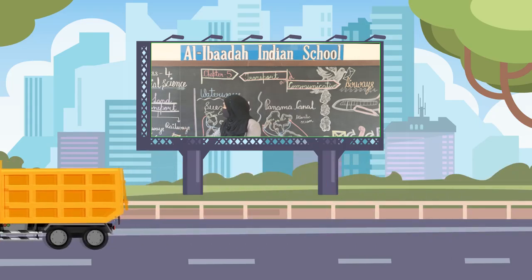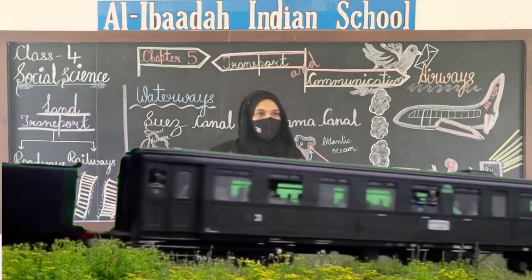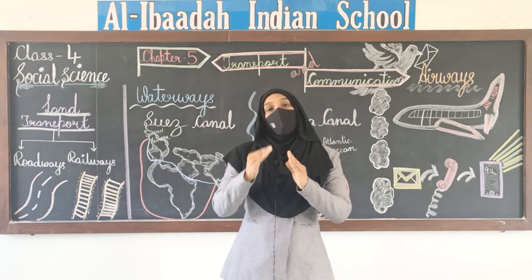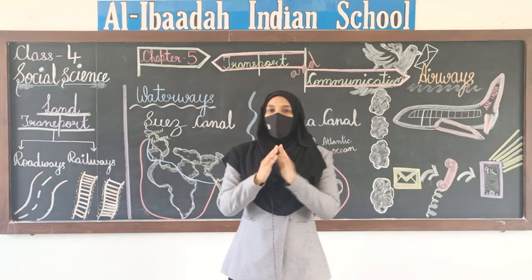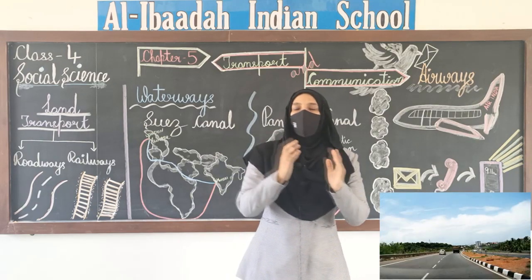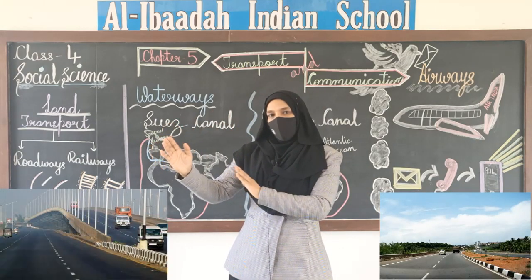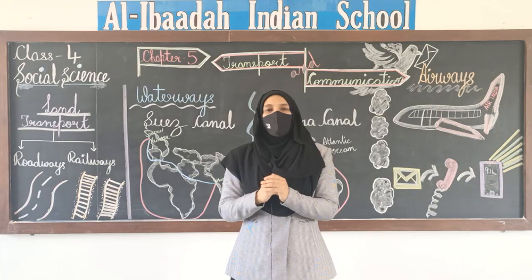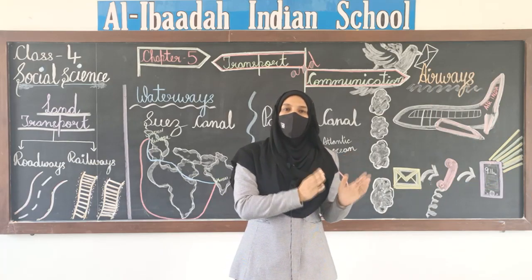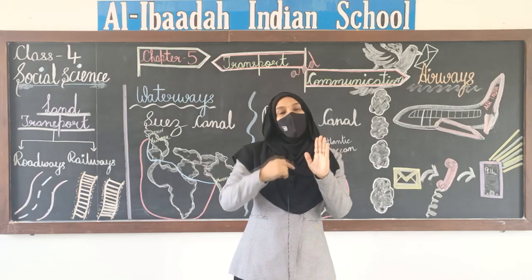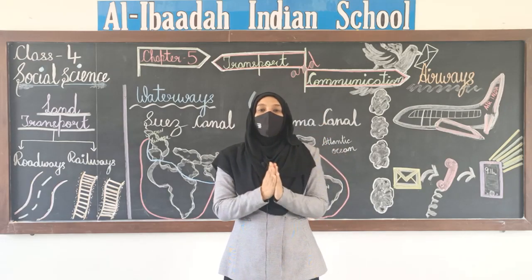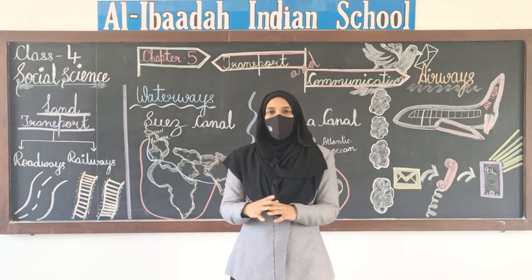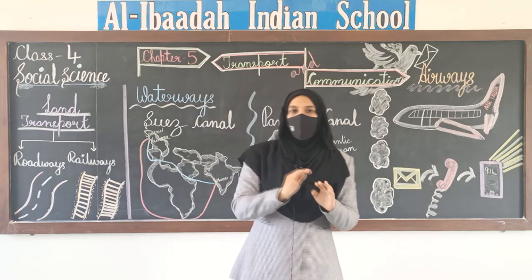In land transport we have roadways and railways. In roadways, let's see how India's roadways work. From state to state — for instance, from Karnataka to Maharashtra — I will take the national highway. National highways connect from one state to another, and they are looked after by the central government, which maintains their condition.